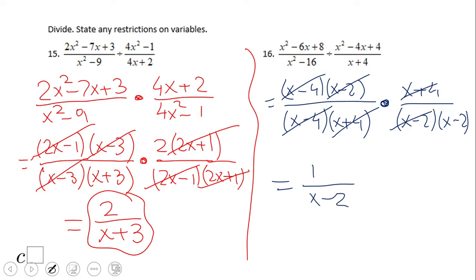If you end up with 1/(x-2) for number 16, then you did a wonderful job. You notice here I factored out x²-6x+8 as (x-4)(x-2). x²-16 is the difference of squares: (x-4)(x+4). Then this guy here is the second rational expression, the reciprocal of that. You see (x+4) now becomes a numerator, and x²-4x+4, that is a perfect square, which can be (x-2)² or (x-2)(x-2). After that simplification, this is the final answer.